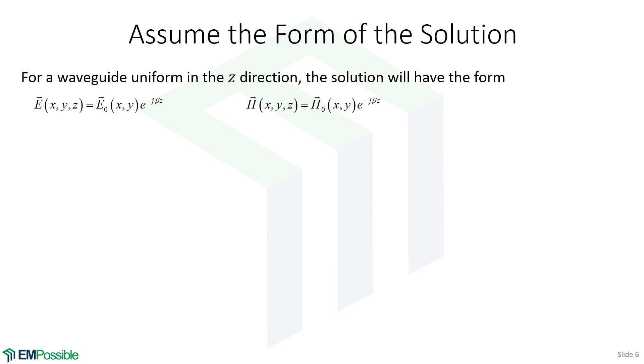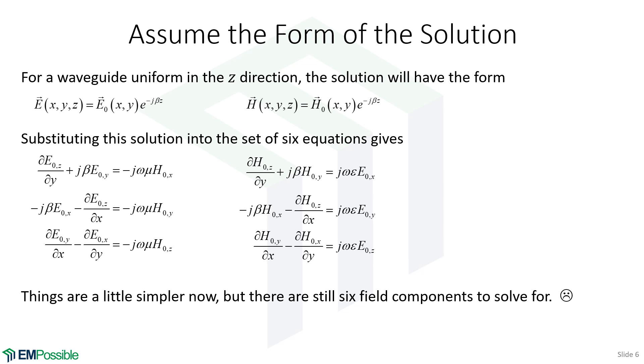So assuming this is what the solution looks like, we just talked through the electric field, it's the same story for the magnetic field. If we plug that into our six coupled partial differential equations and simplify, this is the set of equations that we arrive at. Notice there is no longer a z derivative. That's because these two functions, when you differentiate them with respect to z, it's a minus j beta z that comes out.